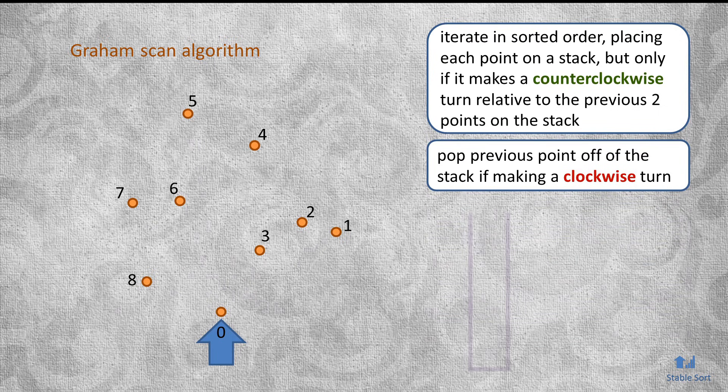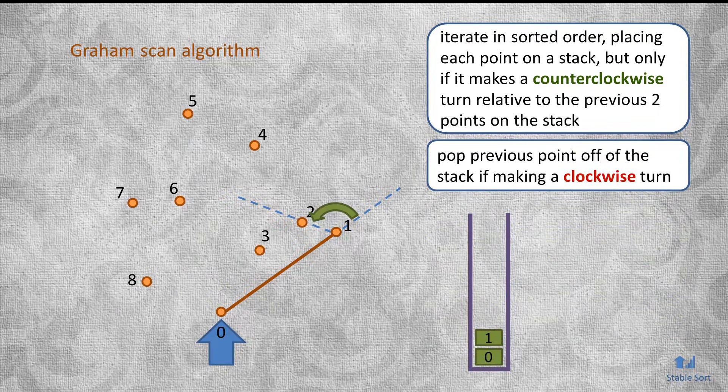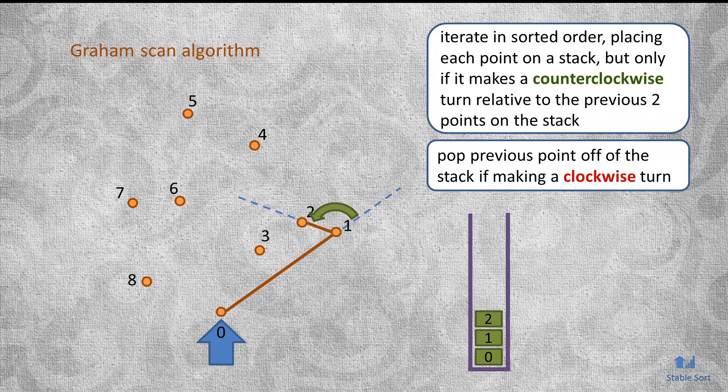Each point is placed on a stack, but only if it makes a line with the counterclockwise turn relative to the previous two points on the stack. If that is not the case, then the previous point is popped off the stack. The algorithm continues popping points off the stack until the resulting turn is counterclockwise.